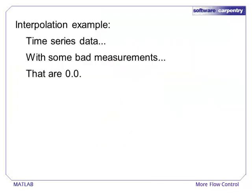Let's return to the interpolate function that we introduced in part one of the flow control lectures. In that episode, we defined a function that would accept time series data that contained bad measurements. All of the bad measurements were assumed to be zero,